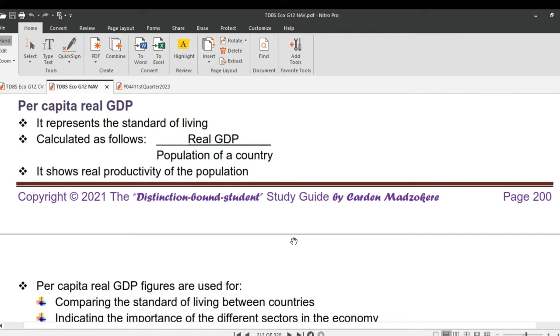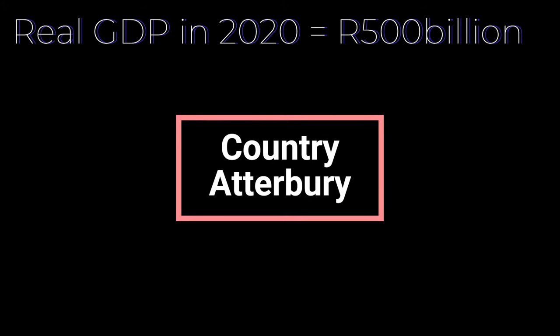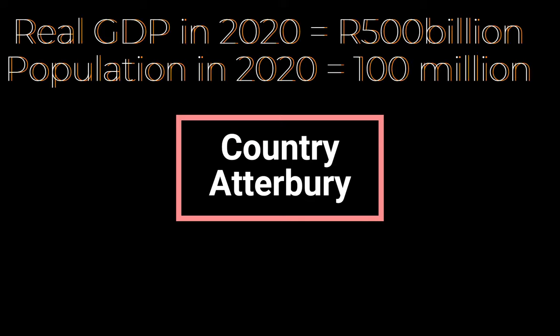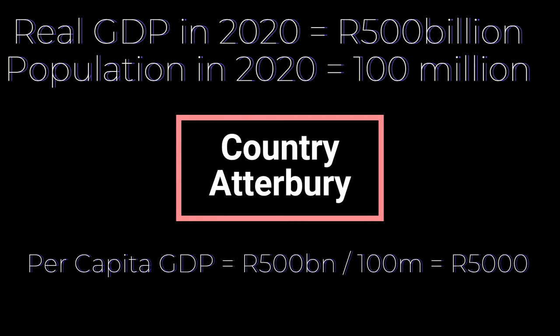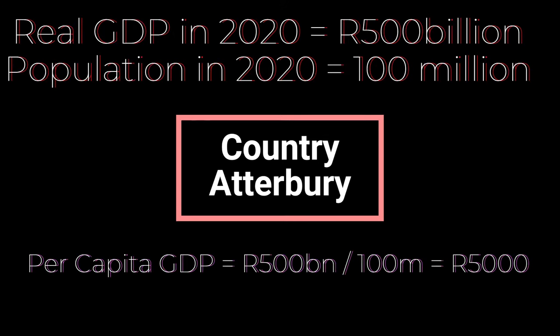Example: let's use an imaginary country called Atterbury. Year 2020 — real GDP of Atterbury at constant prices equals 500 billion rands. Population of Atterbury in 2020 equals 100 million. Per capita real GDP equals 500 billion rands divided by 100 million, which equals 5,000 rands. This means that on average, each person in Atterbury contributed 5,000 rands to the country's economic output after accounting for inflation using constant prices from the base year.